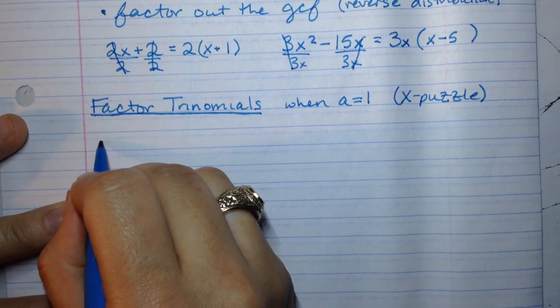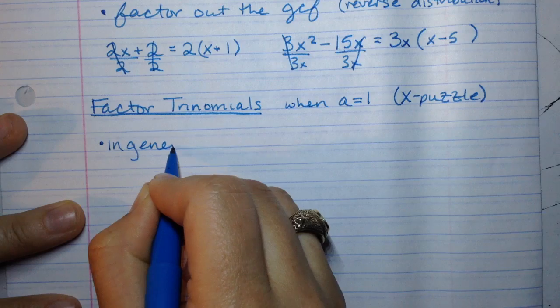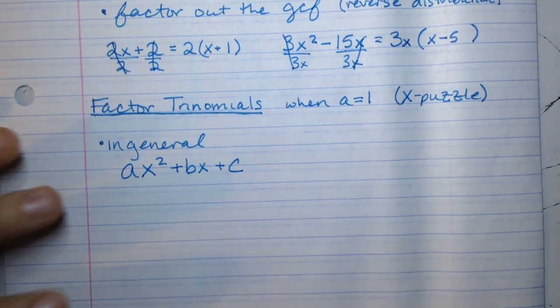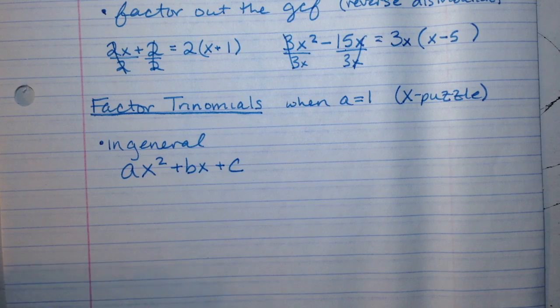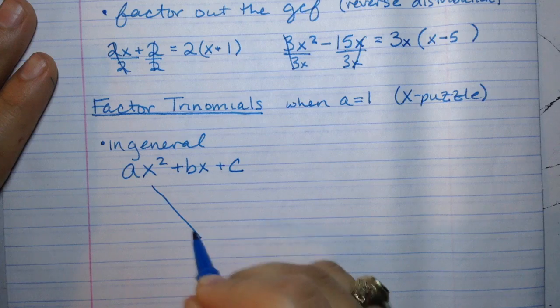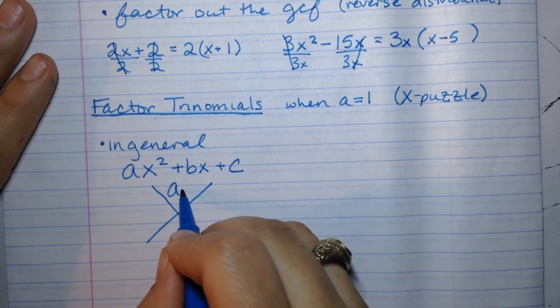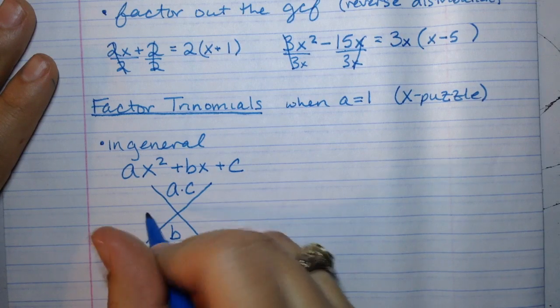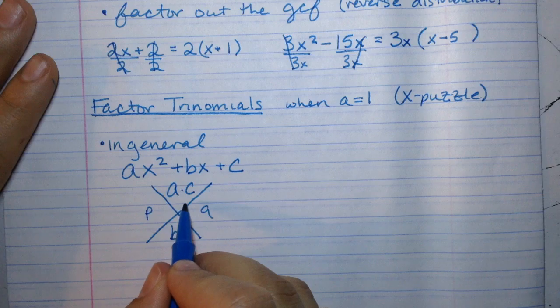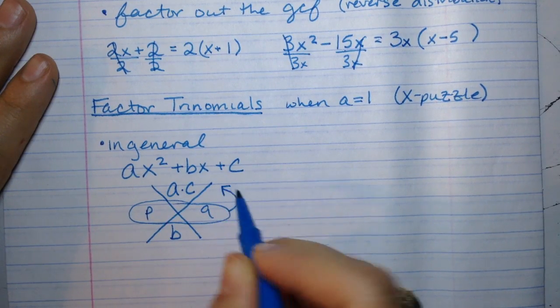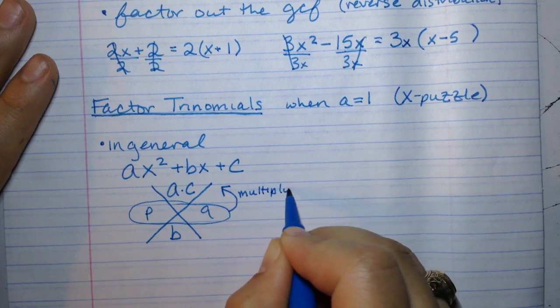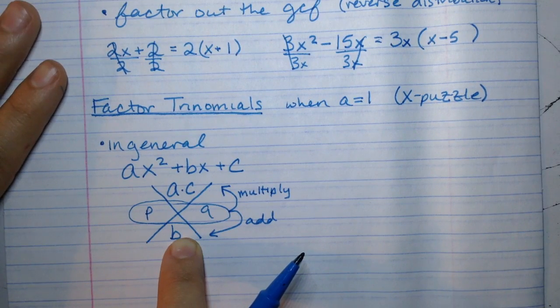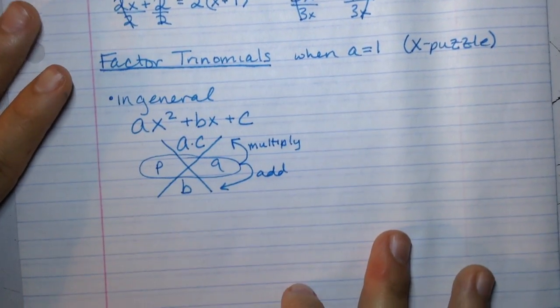In general, you will have some equation ax squared plus bx plus c. What you're going to want to do is set up an x puzzle. You do this by multiplying a times c in the top and writing down whatever b is in the bottom. Your job is to find two factors, which we'll label p and q. Now p and q have to multiply together to get a times c. So multiply to get the top, and they must add together to get the bottom.